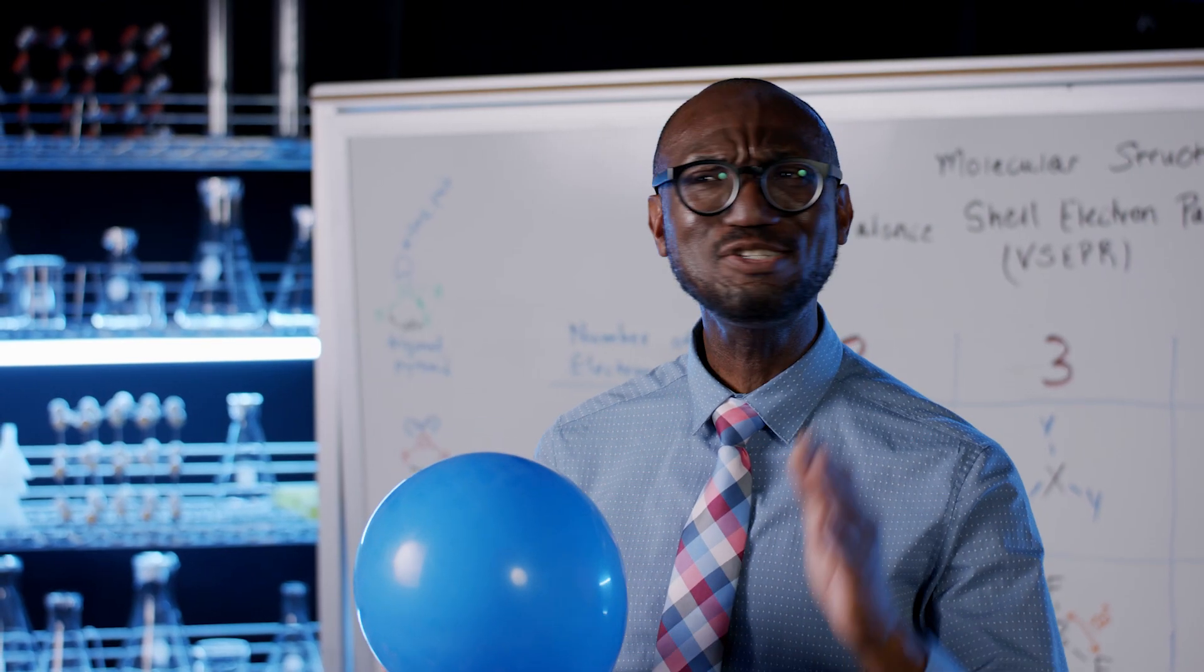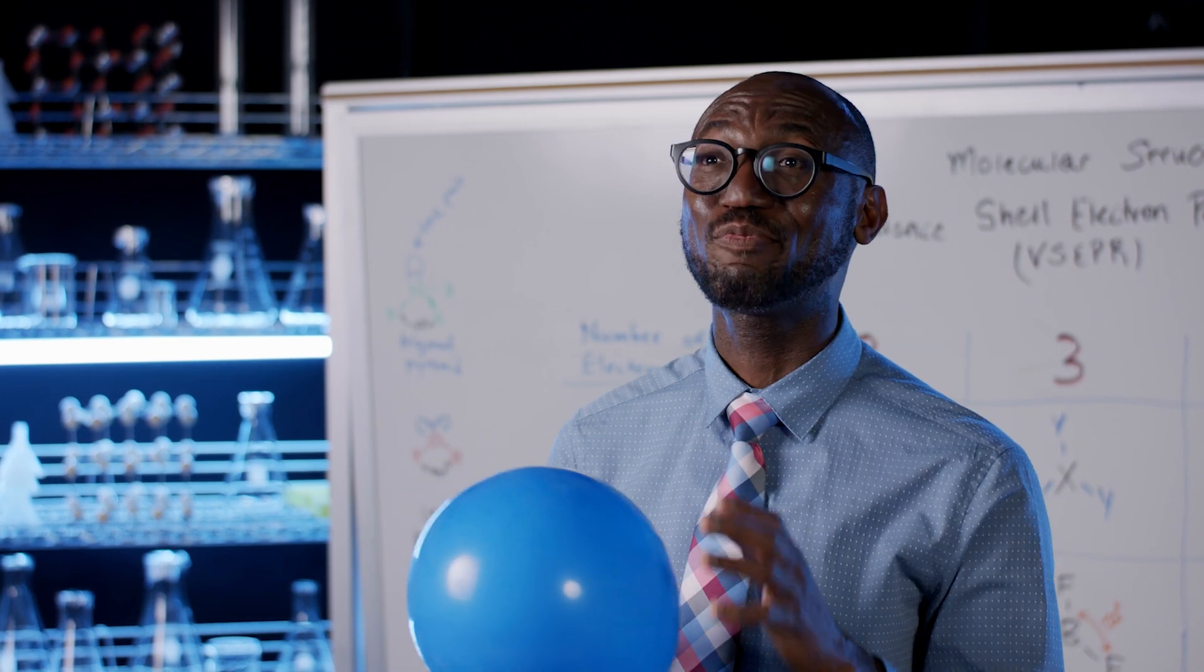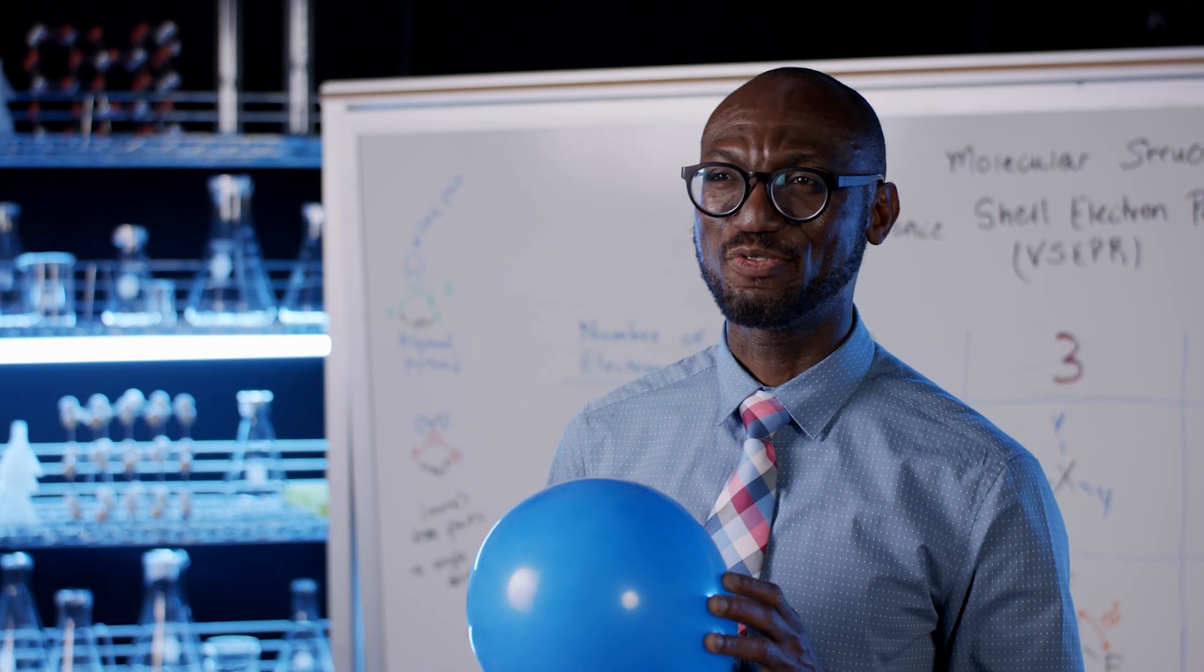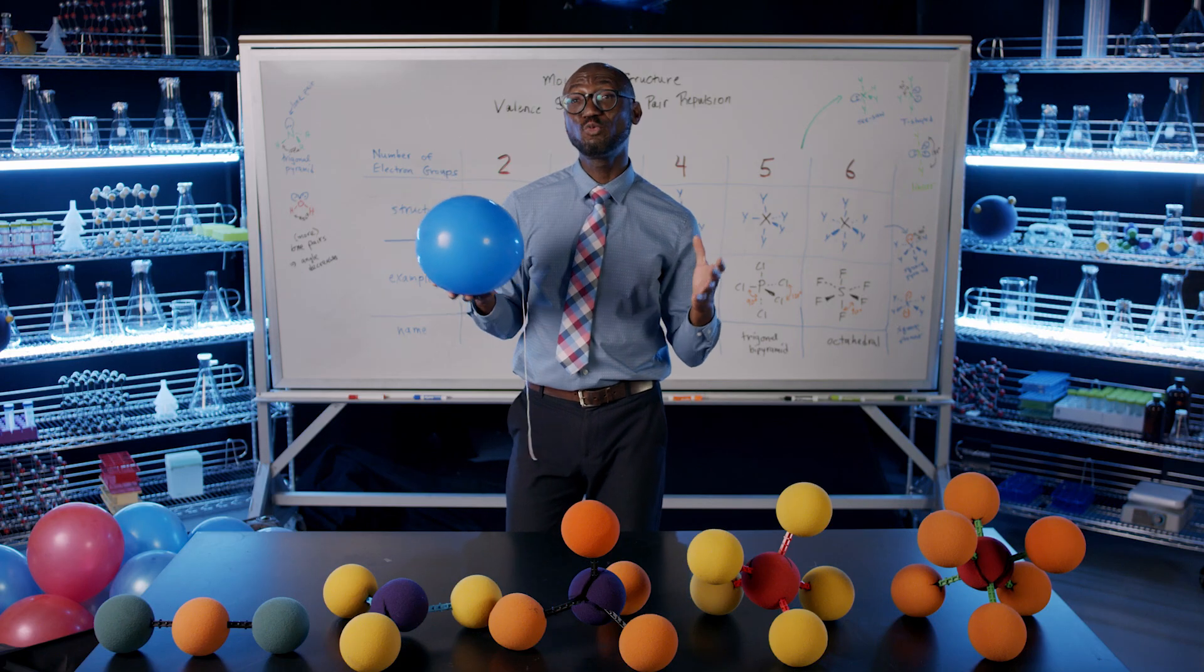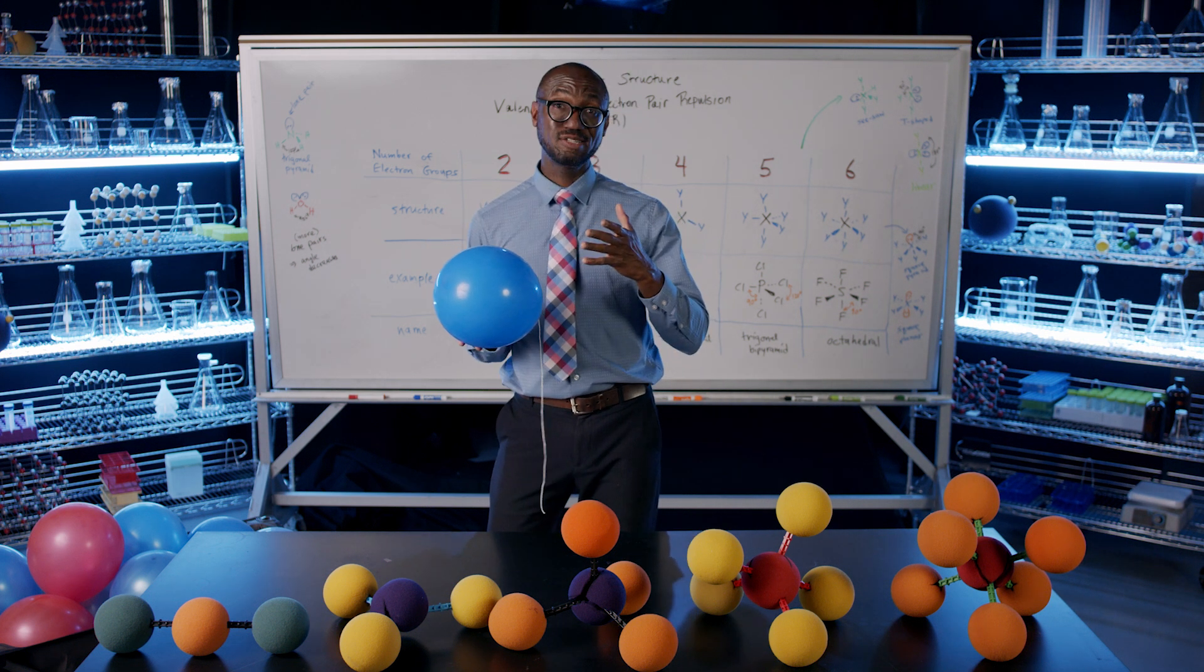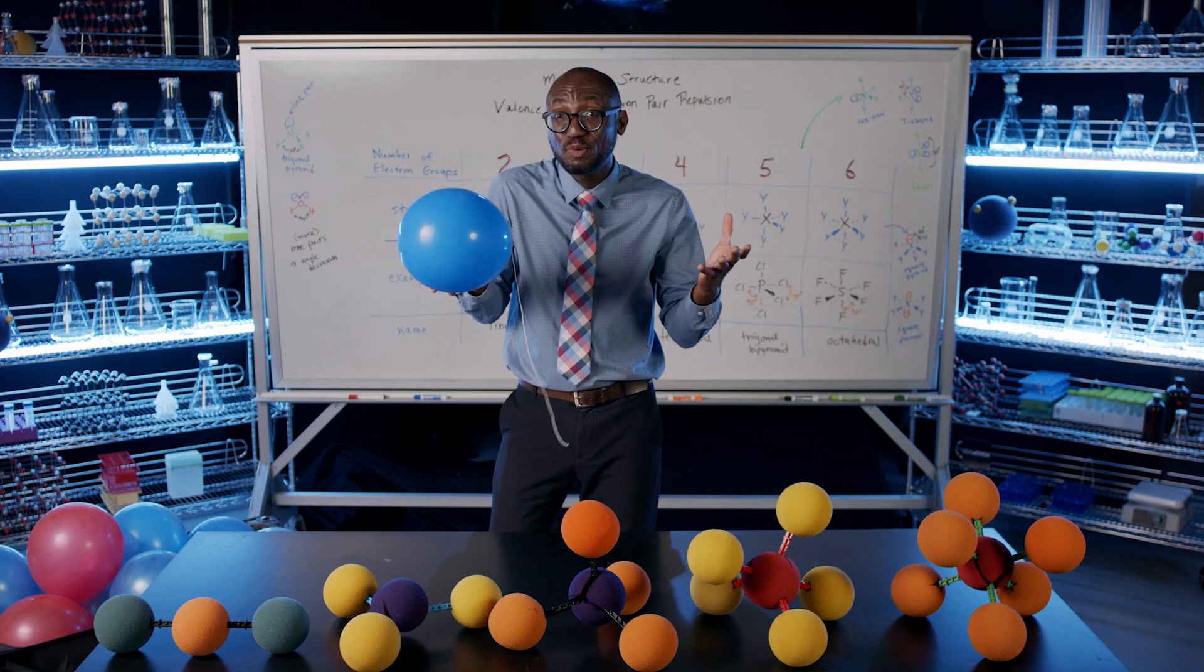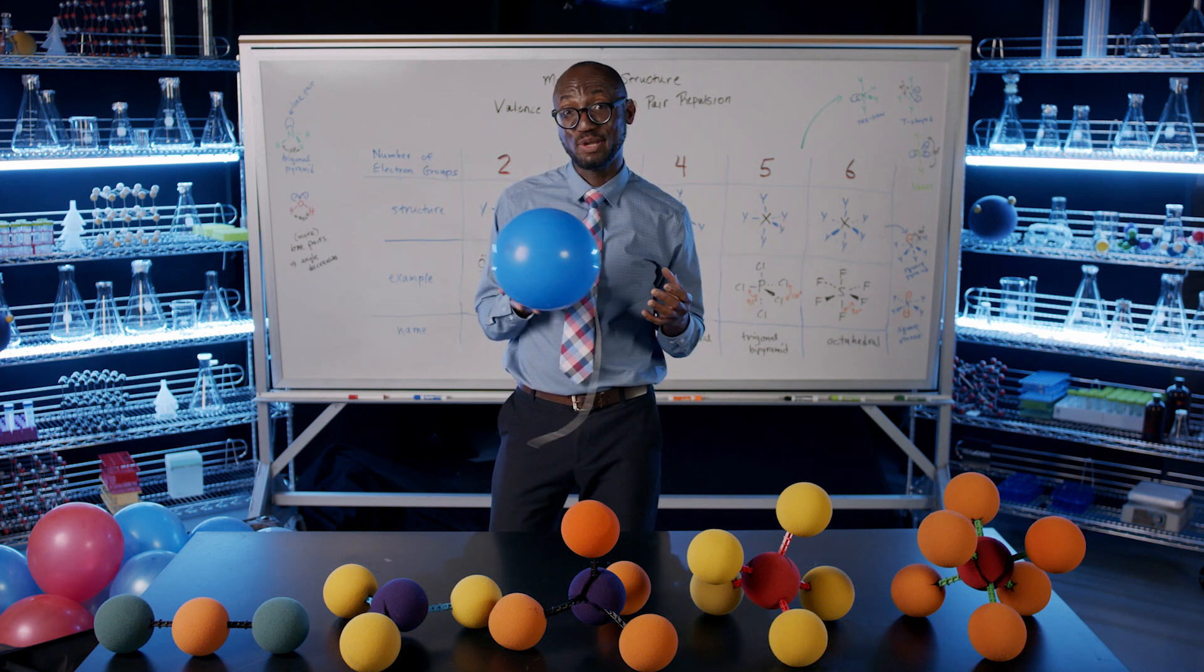We have the valence shell electron pair repulsion, or VSEPR theory, right at our fingertips. Each balloon will represent a group of electrons. This could be a pair of electrons in a single bond, two pairs of electrons in a double bond, three pairs in a triple bond, or a lone unbonded pair.